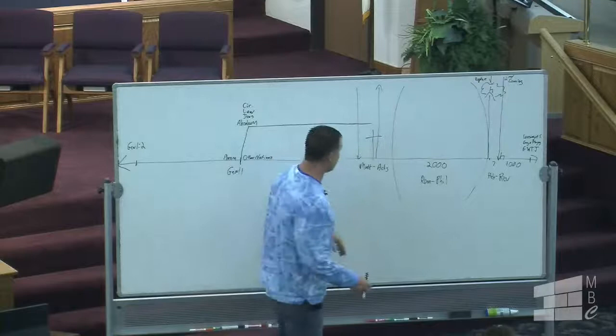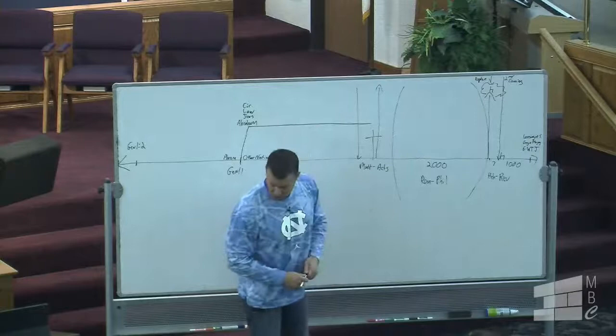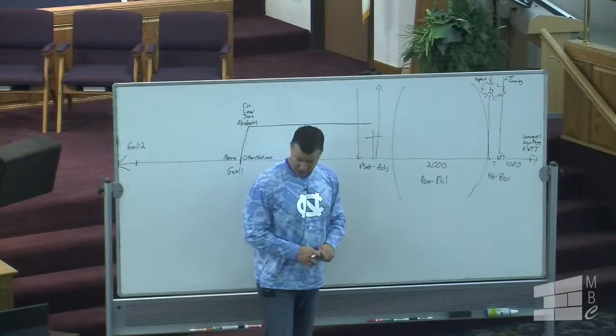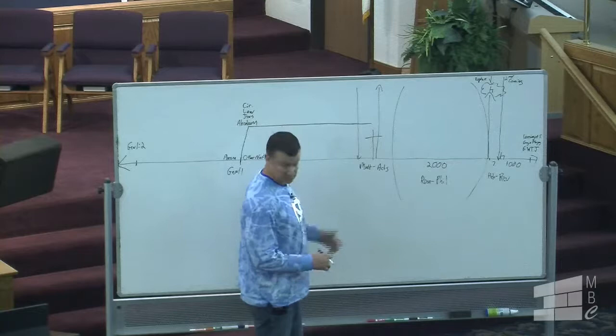After his death he's resurrected. You have Acts chapter 2, the kingdom is offered: Jerusalem, Judea, Samaria, the uttermost parts of the earth — we'll establish the kingdom. And it was a failure; they rejected him. Two other times in the book of Acts he's rejected, and finally in Acts chapter 7, the kingdom is over.